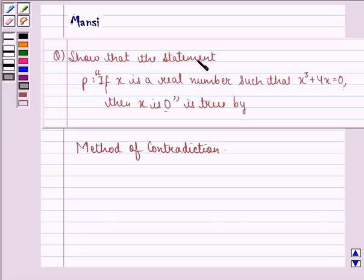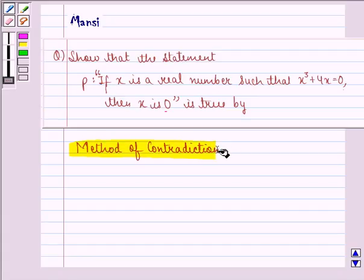show that the statement P, that is, if x is a real number such that x³ + 4x = 0, then x = 0 is true by method of contradiction.